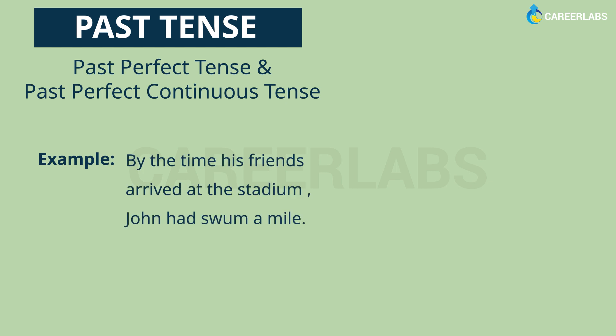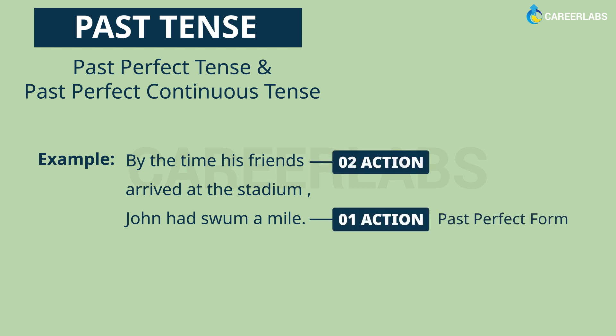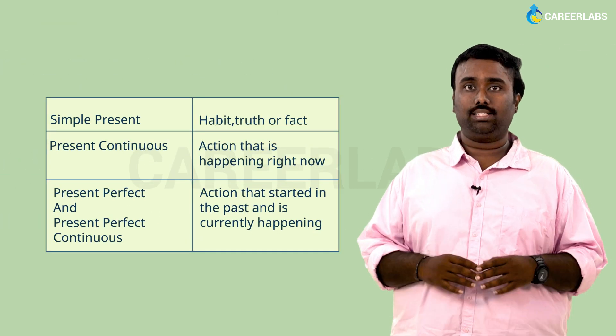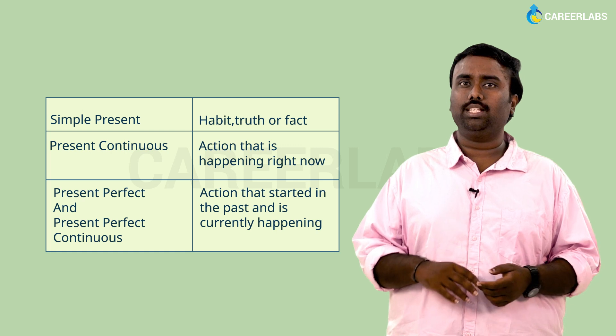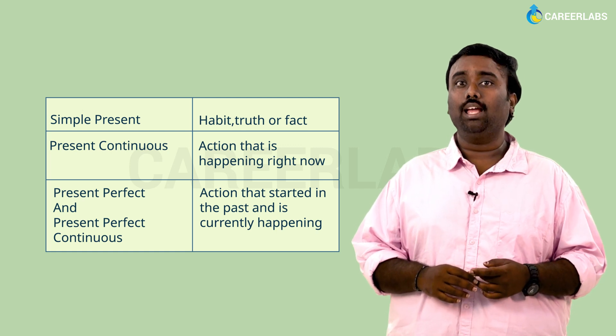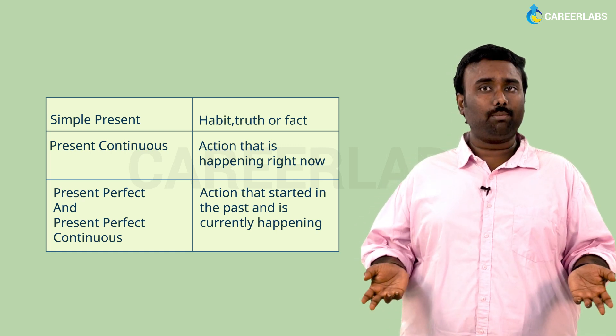'By the time his friends arrived at the stadium, John had swum a mile.' In this example, the first action is in the past perfect form and the second action is in the simple past. With that, we are done with the past tense and its aspects.